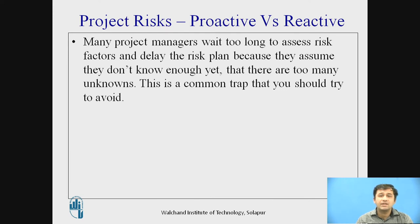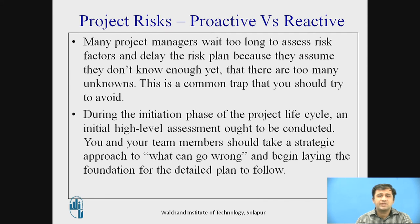Within the team and outside the team, we can have certain kinds of meetings. A brainstorming session should be done, which will help us jot down what risks are involved. Many times everything is going right and suddenly something happens that we have not planned for — sometimes due to ego issues or negligence, we do not involve outside persons or people from other teams. During the initiation phase of the project life cycle, an initial high-level assessment ought to be conducted. Your team members should take a strategic approach: what can go wrong? Cross-functional teams should be involved.